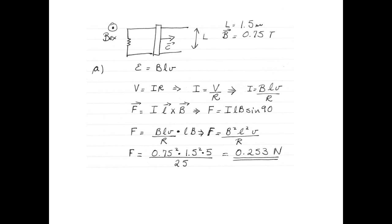Plugging the numbers in, 0.75 Tesla squared multiplied by 1.5 meters squared multiplied by 5 meters per second divided by 25 ohms gives us 0.253 newtons. Now this is the magnetic force that we've just calculated. But, of course, the pulling force has to be of equal magnitude and opposite direction for the bar to move at a constant speed.